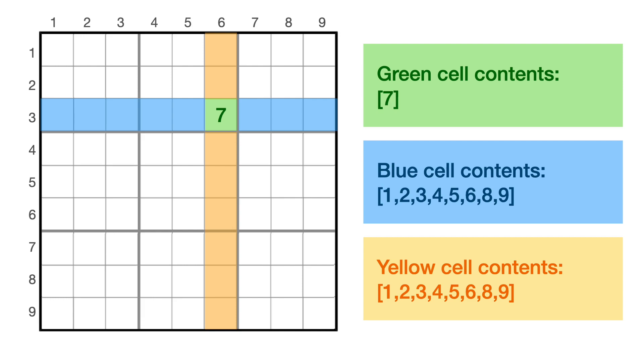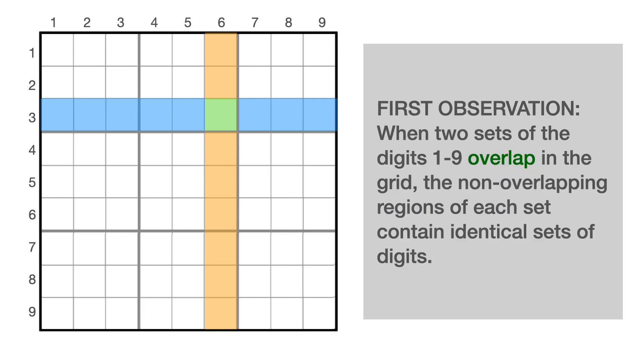So that establishes our first observation. When two sets of the digits one through nine overlap in the grid, the non-overlapping regions of each set contain identical sets of digits. If you're at all familiar with Sudoku, I probably haven't said anything too surprising here. I'm just describing something you already understand intuitively, although you might not have used words like set or non-overlapping region to describe it.